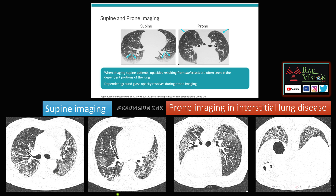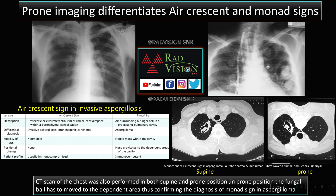In this other case, this is an ILD imaged in supine position. However, in prone position the pathology persists — ground glass opacity, interstitial septal thickening, honeycombing, and bronchiectatic changes are seen in the lower lungs on prone imaging. Prone imaging is therefore useful in differentiating basal atelectasis from interstitial lung disease.